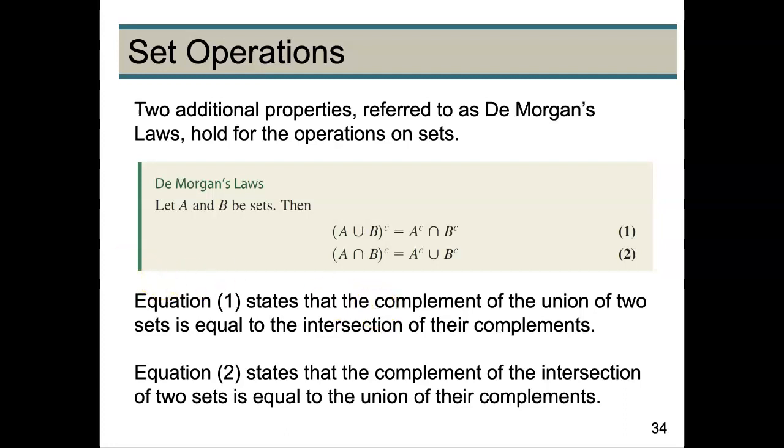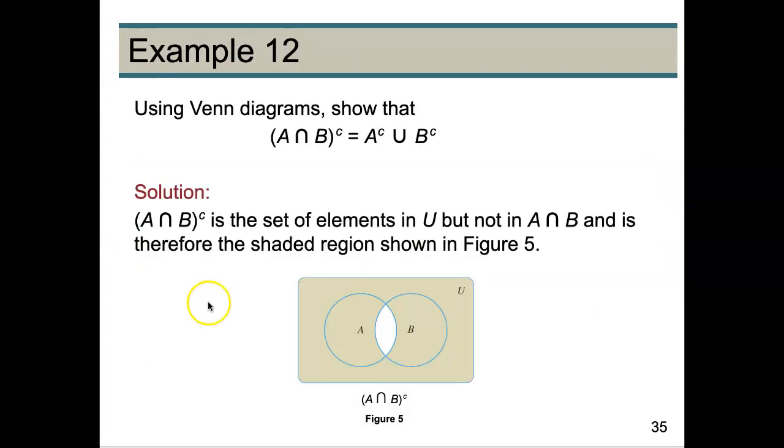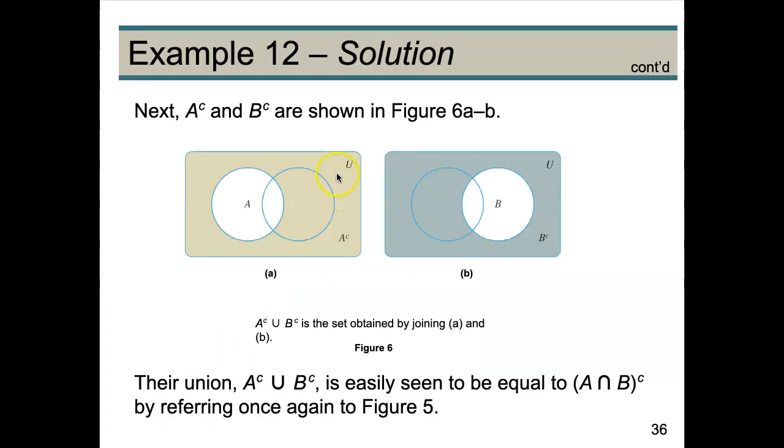So let's take a look at Venn diagrams to explain that. Okay, so A ∩ B is going to be this area right here, and then the complement of that is going to be everything outside of that.